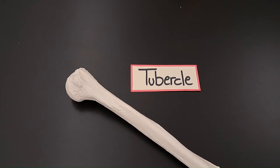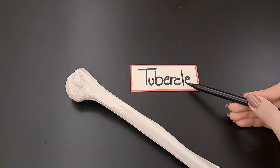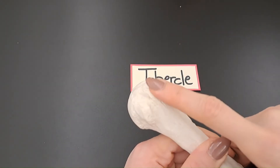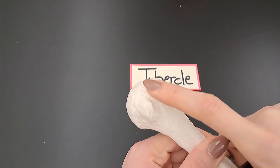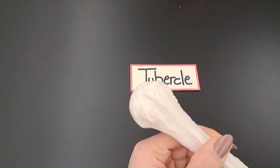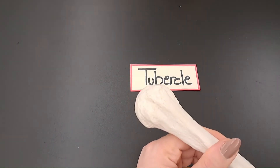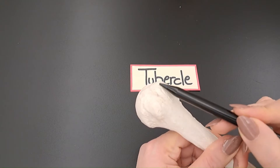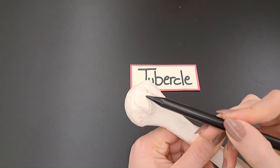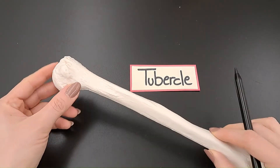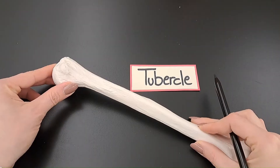Moving to the fourth projection, a tubercle. A tubercle is a small, rounded projection or process. An example of a tubercle is the greater tubercle and the lesser tubercle on the humerus, which is the bone in the arm.